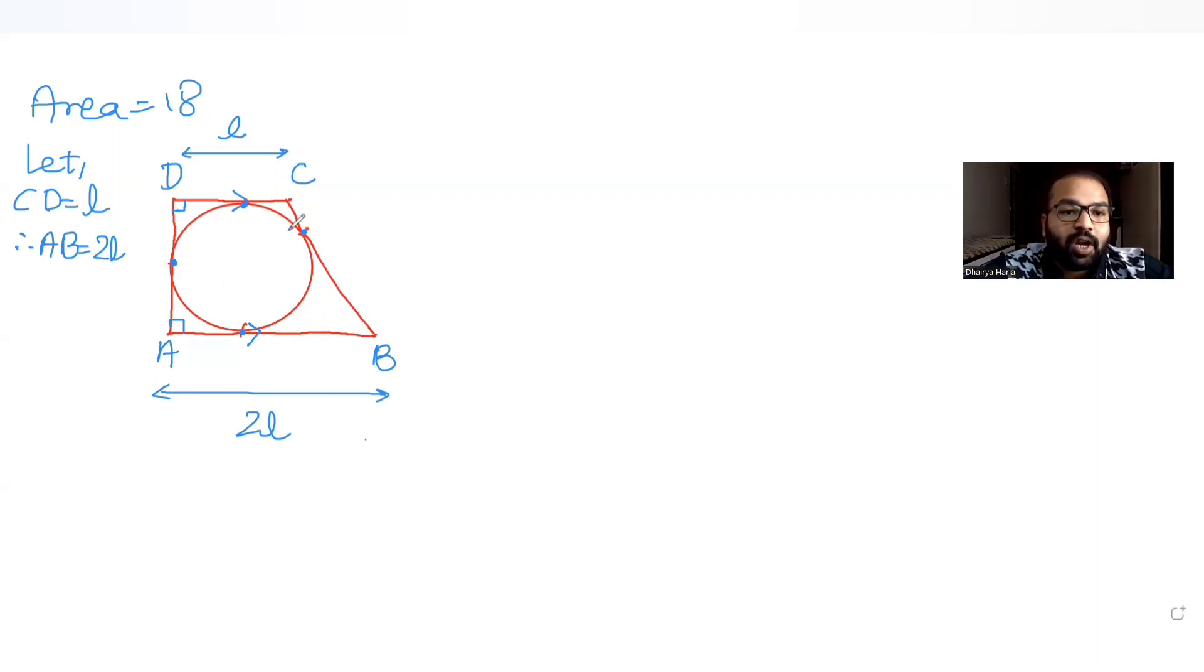So first of all, before starting with the question, I will do some constructions here. So I can do a construction that I can draw a line which is parallel to AD through point C. So this point becomes M.